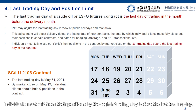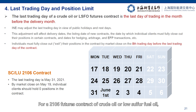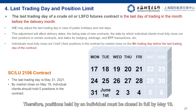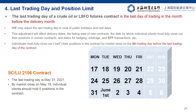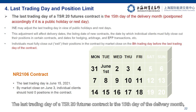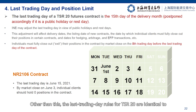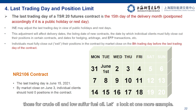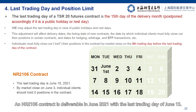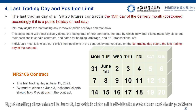Individuals must exit from their positions by the eighth trading day before the last trading day. For a 2106 futures contract of crude oil or low sulfur fuel oil, eight trading days before May 31 is May 19. Therefore, positions held by an individual must be closed in full by May 19. The last trading day of a TSR20 futures contract is the 15th day of the delivery month, which will be postponed accordingly if it falls on a public holiday or rest day. Other than this, the last trading day rules for TSR20 are identical to those for crude oil and low sulfur fuel oil.